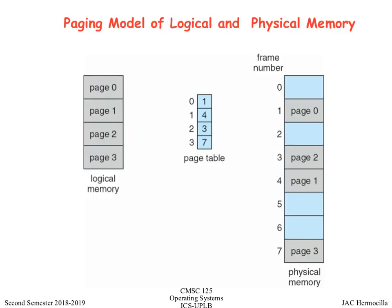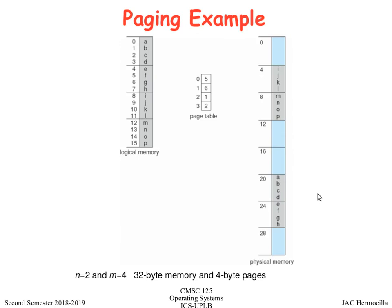In the programmer's perspective, the memory that a program is using is contiguous, but they are actually split into pages, and the page table maps the pages to the actual physical memory. What the programmer sees is contiguous allocation, but in the actual physical memory, the different pages may be located in different parts — separated or distributed in physical memory.